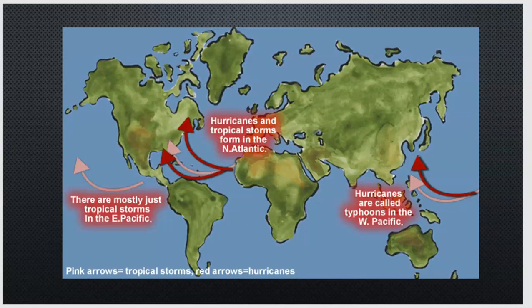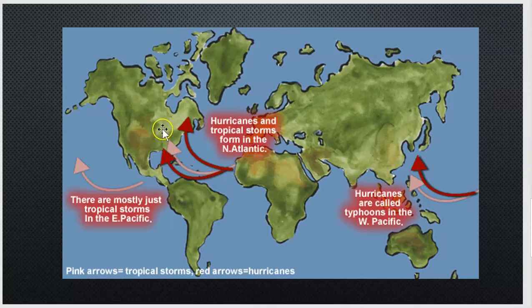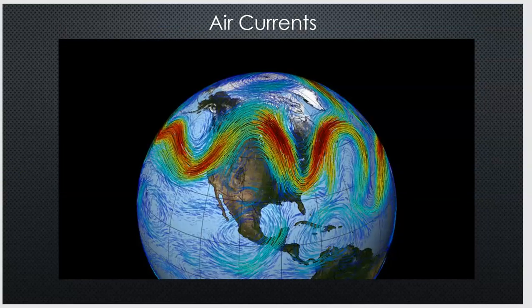Let's look at how currents affect our weather more specifically. We have warmer areas close to the equator and cooler areas up north. When storms like hurricanes develop, they get caught in those currents and carried. That warm air comes around, and if a hurricane is on it, it will travel that way — maybe ending up in the Gulf of Mexico or getting caught in the Gulf Stream and moved up along the East Coast. These ocean currents and air currents are very important because they drive the weather and weather patterns we experience.